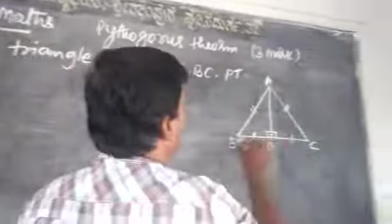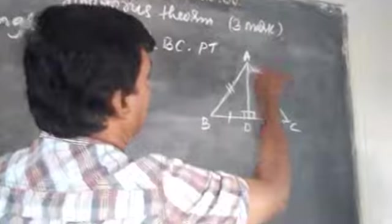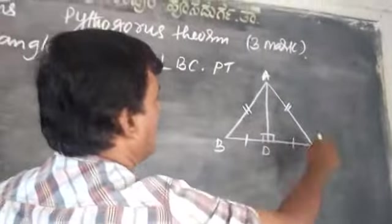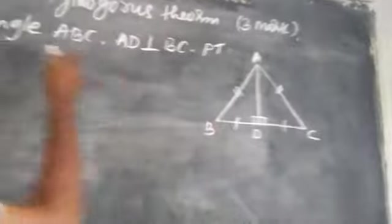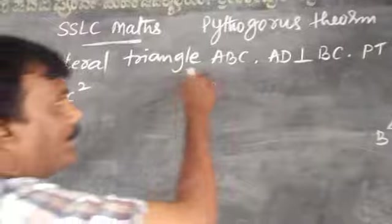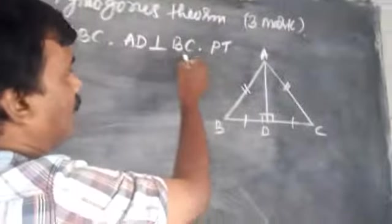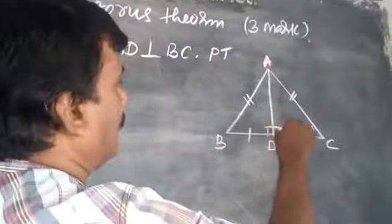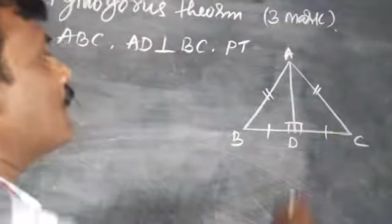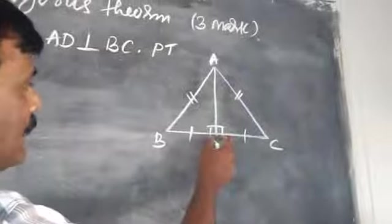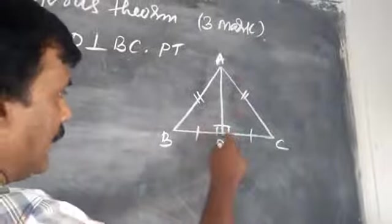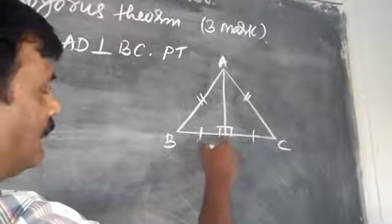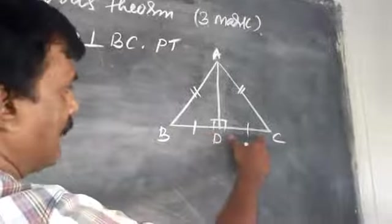In equilateral triangle ABC, all sides are equal: AB is equal to BC, BC is equal to AC. AD is perpendicular to BC. Since AD is perpendicular to BC, AD acts as a median, therefore BD is equal to DC.